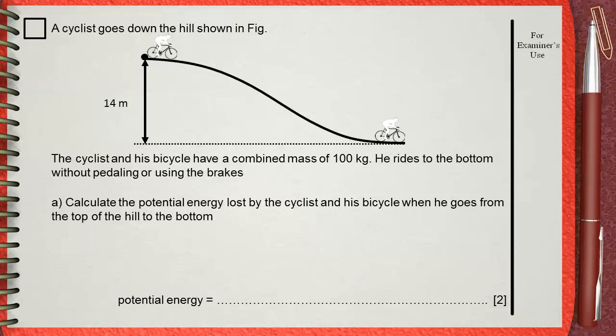A cyclist goes down the Hellshonen figure. The cyclist and his bicycle have a combined mass of 100 kilograms. He rides to the bottom without pedaling or using the brakes. Part A: calculate the potential energy lost by the cyclist and his bicycle when he goes from the top of the hill to the bottom.